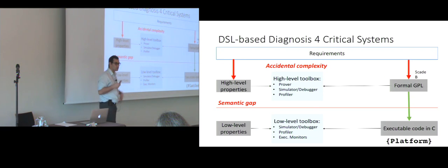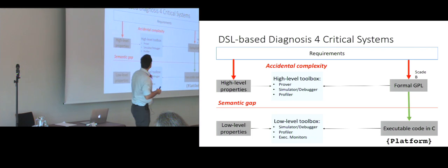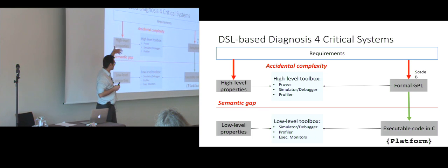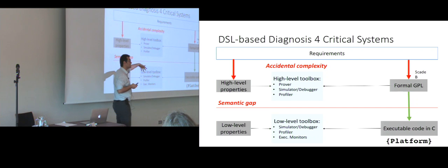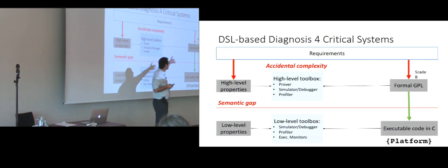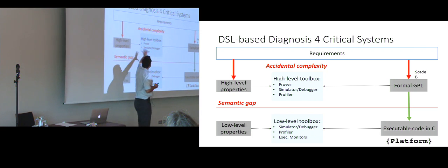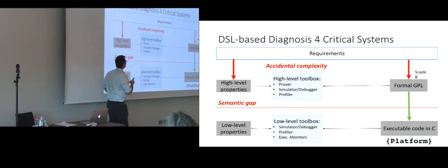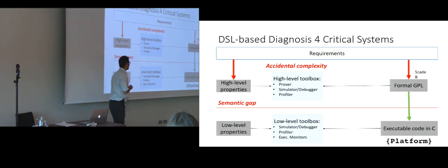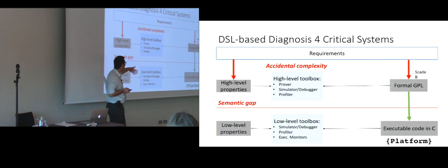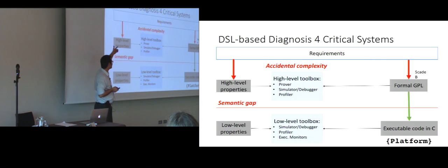Basically, if we are in a system engineering process for critical systems, we start the development with requirements. From these requirements, industry today uses some formal general programming languages. We extract some properties that we want to verify, debug, or check, and in between we have a high-level toolbox aimed at diagnosing problems on the formal general-purpose language. We have a generative process which generates low-level executable code in C, for instance.